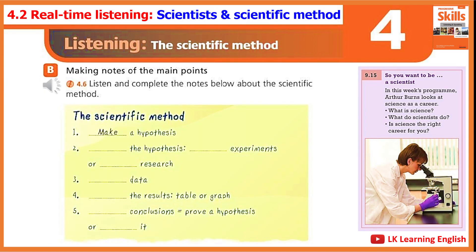4.6. Exercise B. Listen and complete the notes below about the scientific method. How exactly can scientists prove that something is true? They must follow the scientific method. A method is a way of doing something. But what is the scientific method? It works like this. Firstly, a scientist makes a hypothesis, which means an idea of the truth. Then, he or she tests the hypothesis.